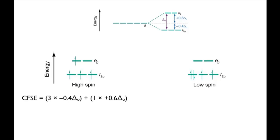For the high spin complex, we've got three electrons in the T2G orbitals, so that's three times minus 0.4ΔO, that's negative for stabilization, and one times plus 0.6ΔO, that's a positive value because that's in the higher energy EG orbital. This gives a crystal field stabilization energy of minus 0.6ΔO.